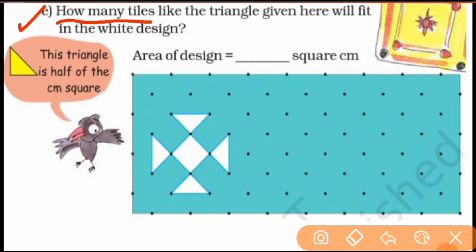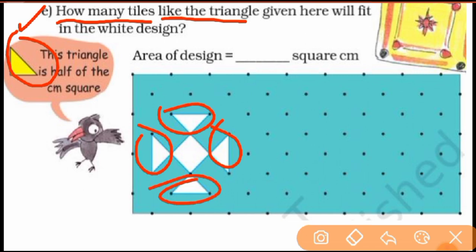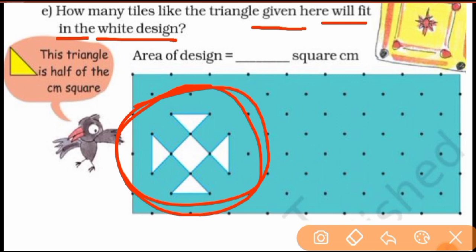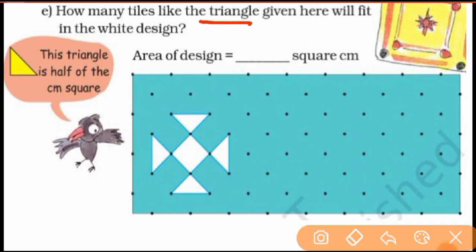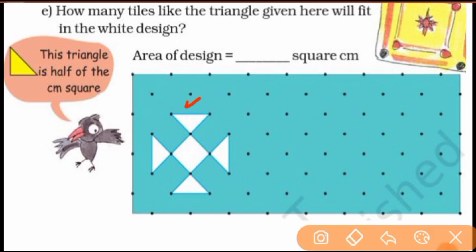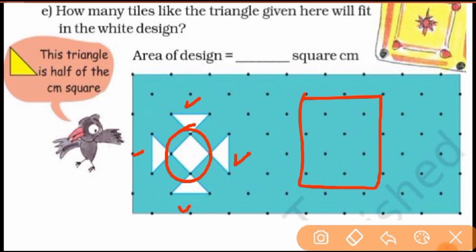Now question number E — this one is very interesting. How many tiles of this triangle shape fit in the white design? You can see these triangle-shaped tiles. If you cut a square diagonally, you will get two triangles.